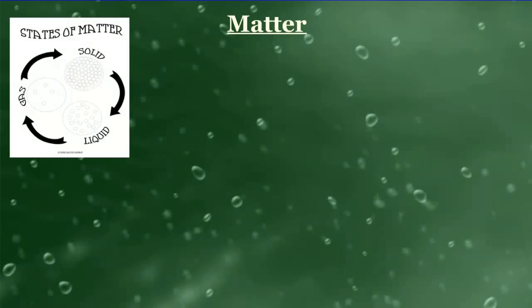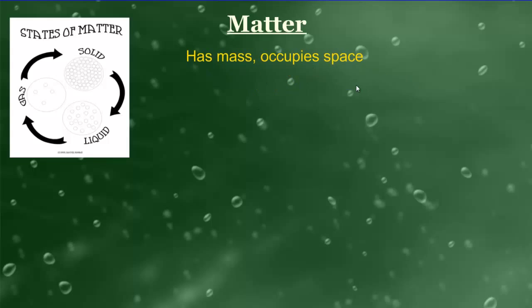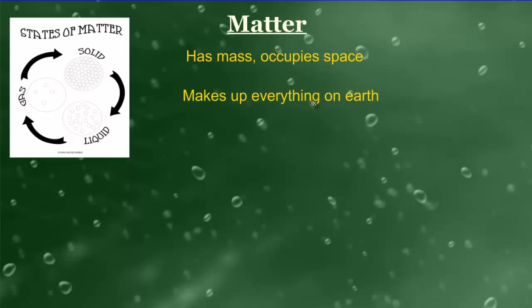Here's a tricky little term: matter. If you remember back to physical science, matter was defined as anything that has mass or occupies space, and there are three main states — solid, liquid, and gaseous. In biology we refer to matter and materials in the same way, basically talking about the stuff that makes up everything on earth, and especially the living things on earth.